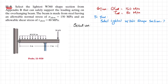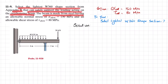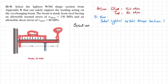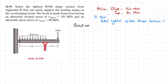Welcome back. Problem 11-9: select the lightest W360 shape section from Appendix B that can safely support the loading acting on an overhanging beam. The beam is made of steel with an allowable normal stress of 150 MPa and an allowable shear stress of 80 MPa. The beam has a point load of 50 kN at the end and 40 kN/m of distributed load over 4 meters, with a support at that point.